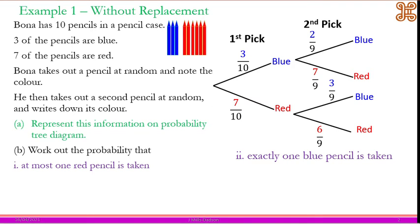In the without-replacement case, you need to be careful with the second section of the diagram. Let's label our work: we have blue-blue, blue-red, red-blue, and red-red. 'At most one red pencil' means the maximum number of red pencils should be one — we don't want more than one, so it should be one red pencil or no red at all.